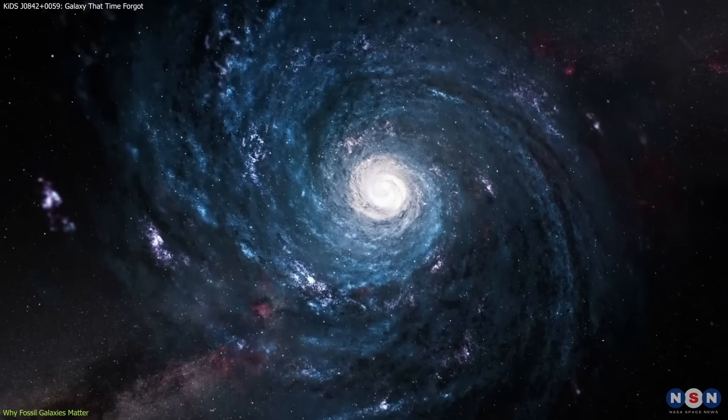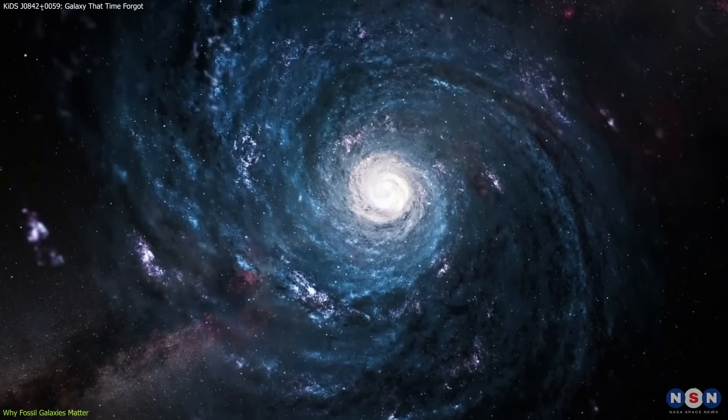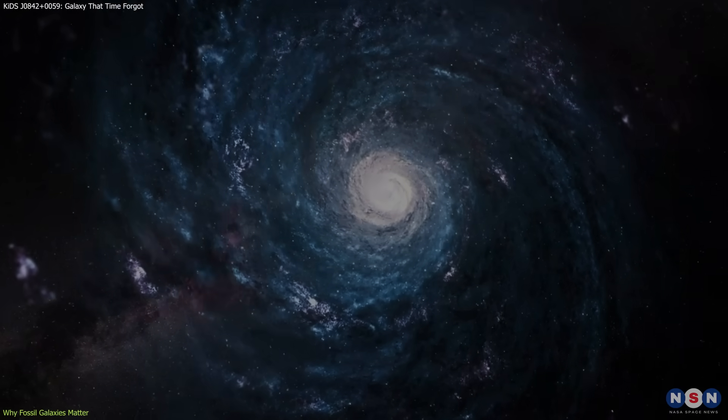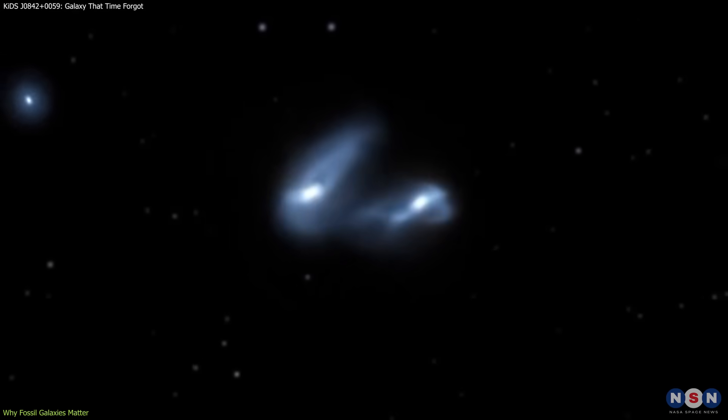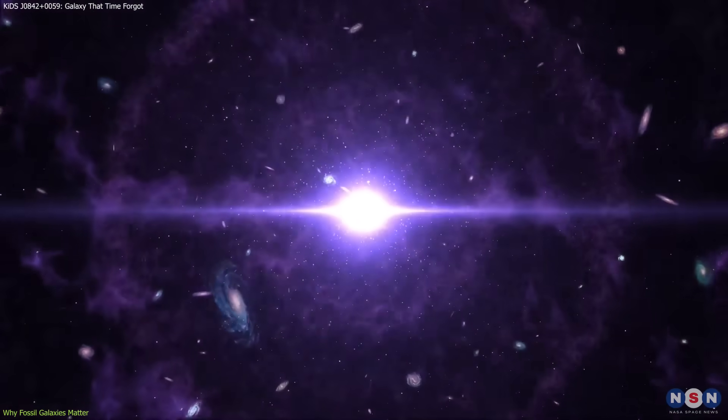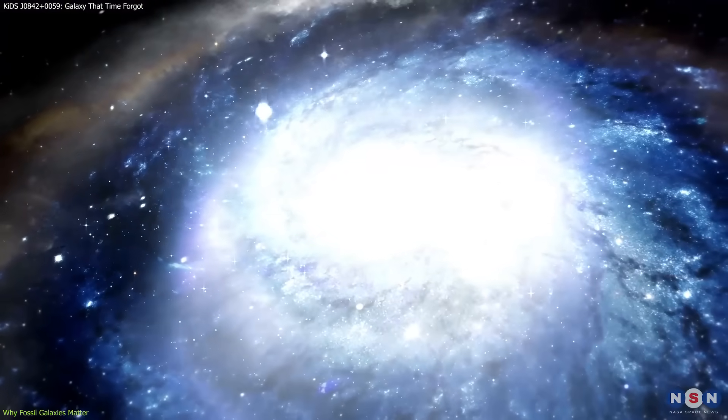But a fossil galaxy follows a different script. Its compact structure, uniformly old stars, and lack of merger signatures suggest it formed rapidly, likely in the first 1-2 billion years after the Big Bang, and then remained untouched.